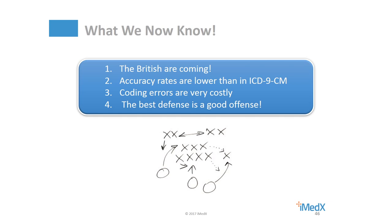So in summary, we know that RACs are either on their way or have already arrived, in addition to a myriad of other external review entities. As demonstrated in the cases shared with you, it's known that accuracy rates are lower than they were in ICD-9. Coding errors most generally result in an MS-DRG change, and whether it's increased or decreased reimbursement, it is very costly to the hospital when the RACs find them. The best defense is a good offense — making monitoring of coding accuracy a high priority in your organization.